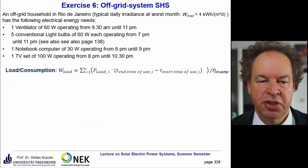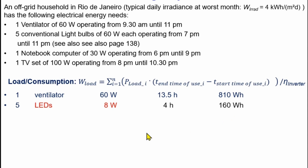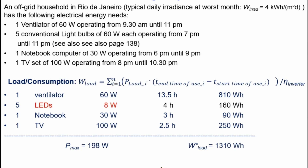Now we carry out the load calculation. The ventilator operates for 13.5 hours, giving 810 watt-hours. The five LED bulbs at 8 watts each run for 4 hours, giving 160 watt-hours per day. The notebook at 30 watts runs for 3 hours, giving 90 watt-hours. The TV at 100 watts runs for 2.5 hours, giving 250 watt-hours. The total daily consumption sums to 1,310 watt-hours.